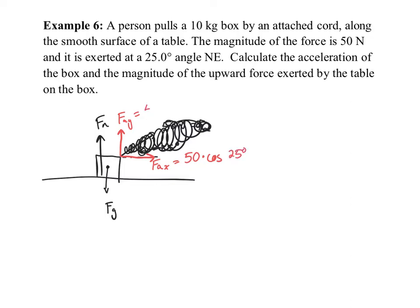In the y direction, we have 50 sine 25 acting up. There are two upward forces, one downward force (FG), and one force acting to the right (FAX). Because there is no opposing horizontal force and no friction, there's an unbalanced force FAX, meaning there will be acceleration in the x direction. That's what we need to calculate — the acceleration of the box.